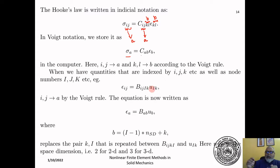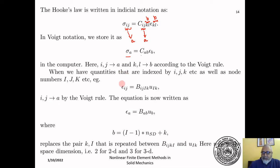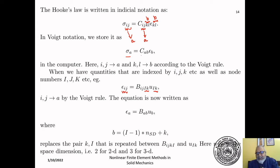When we have quantities indexed with both capital and small indices — for example, an equation like epsilon_ij = b_{ij,Ik} * u_{Ik} — the capital and small indices must always appear together. For every capital index, there must be an accompanying small index. The number of degrees of freedom must equal the dimension of the problem.